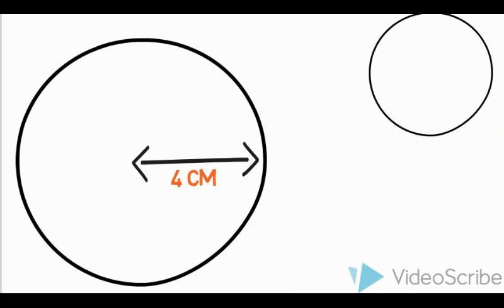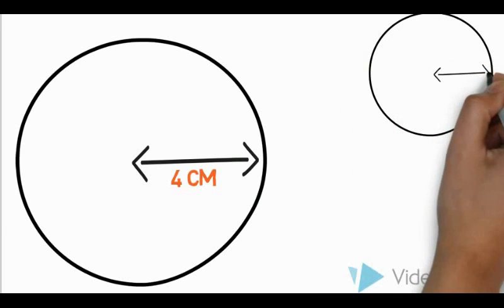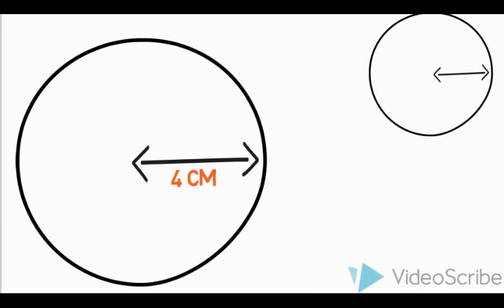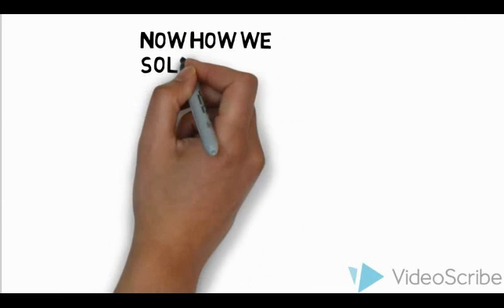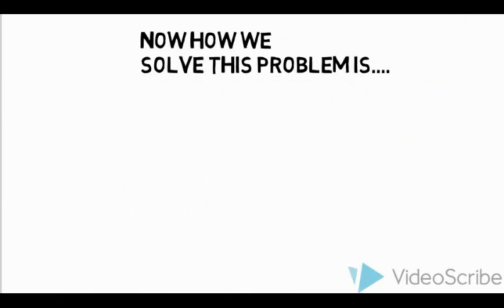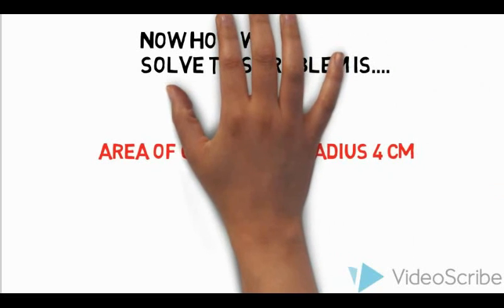This is a very simple unitary method question which you may have solved in your old school days. So, how we solve this problem is very easy. We simply check the area of circle with radius 4 cm.